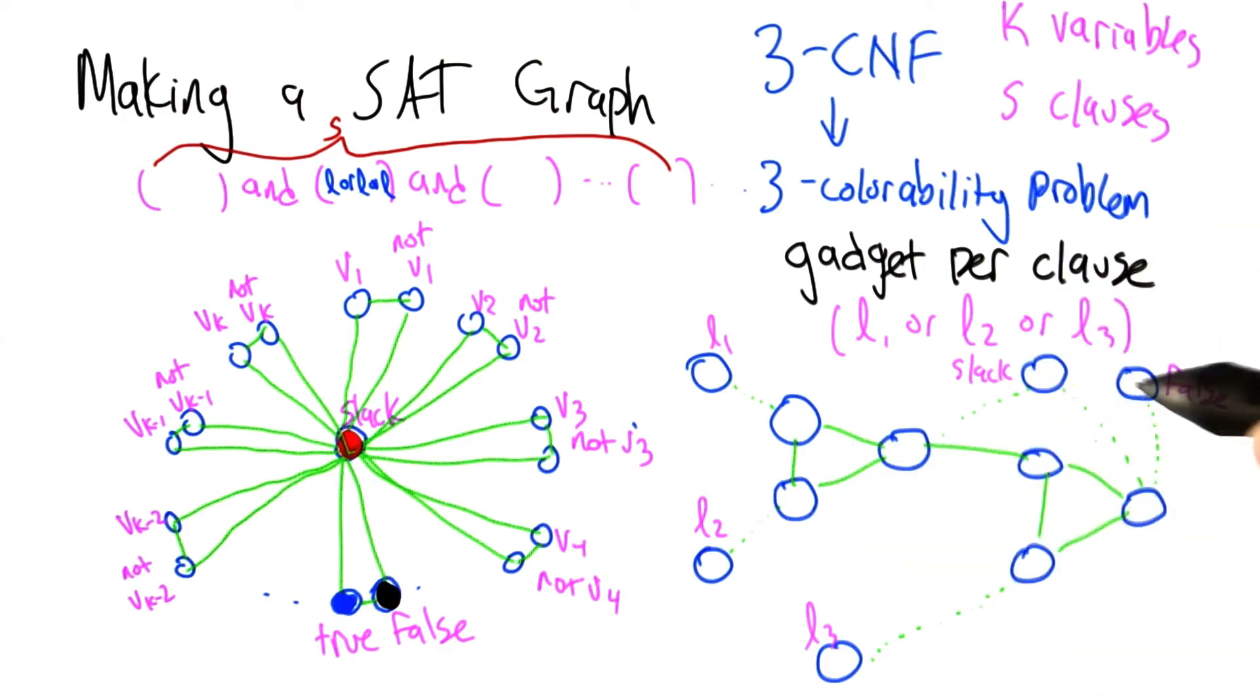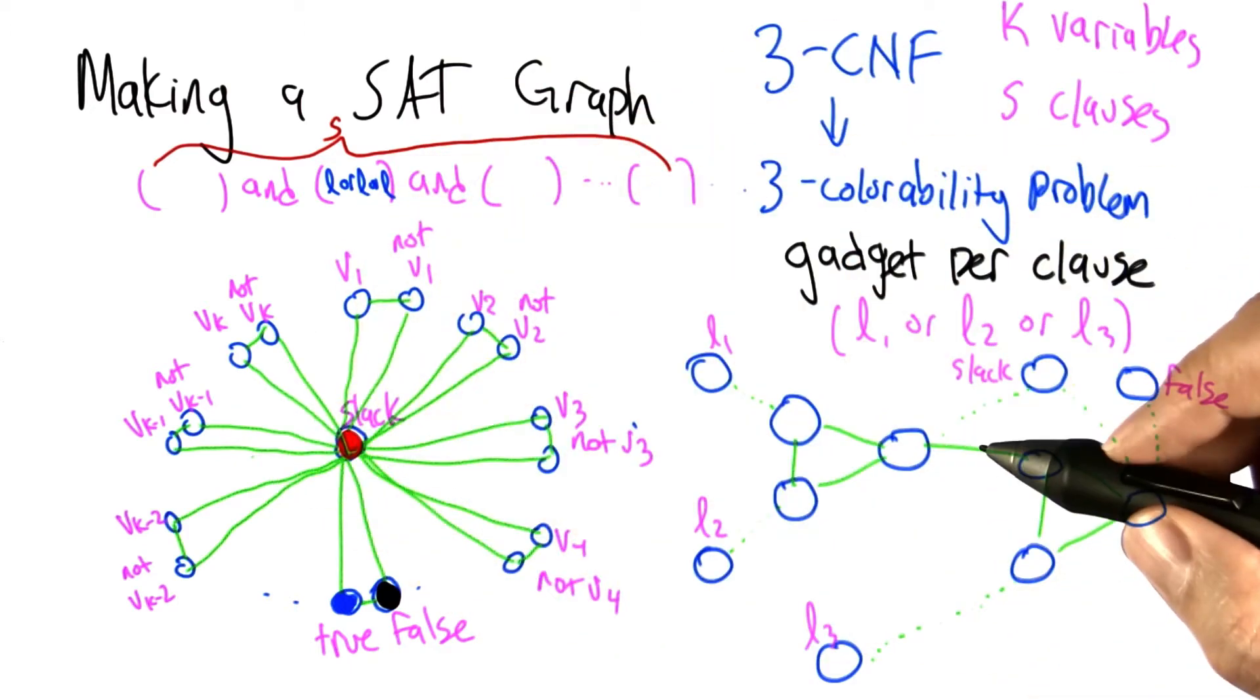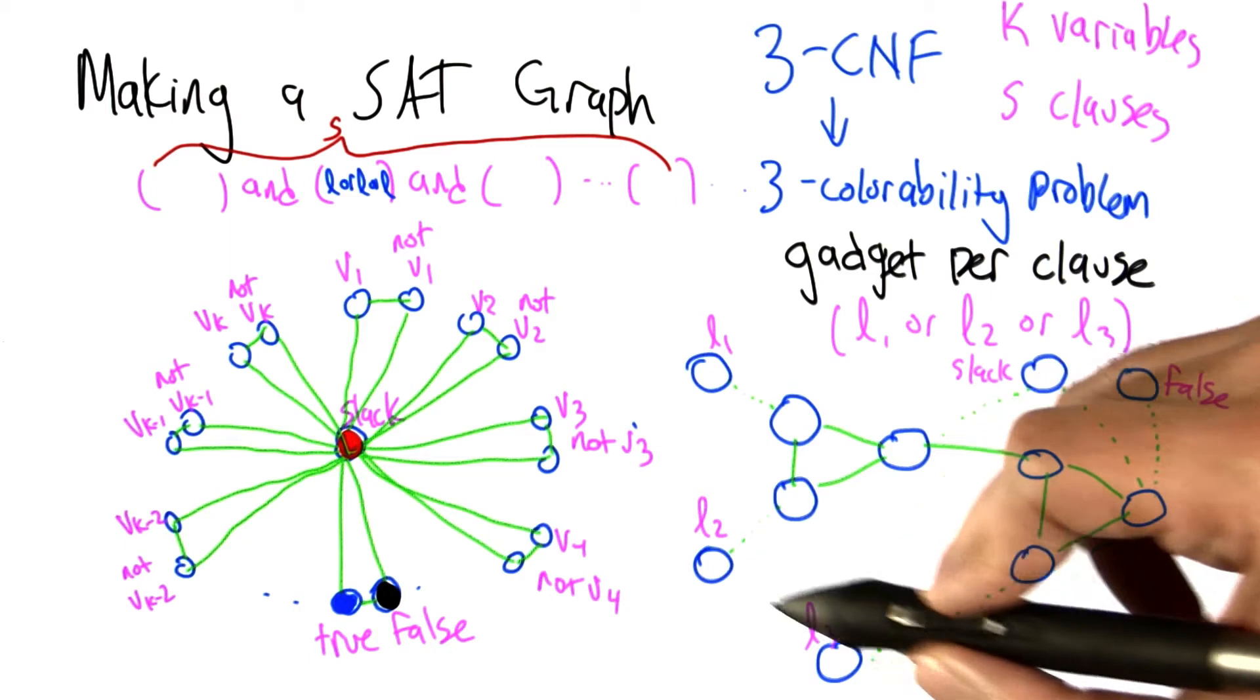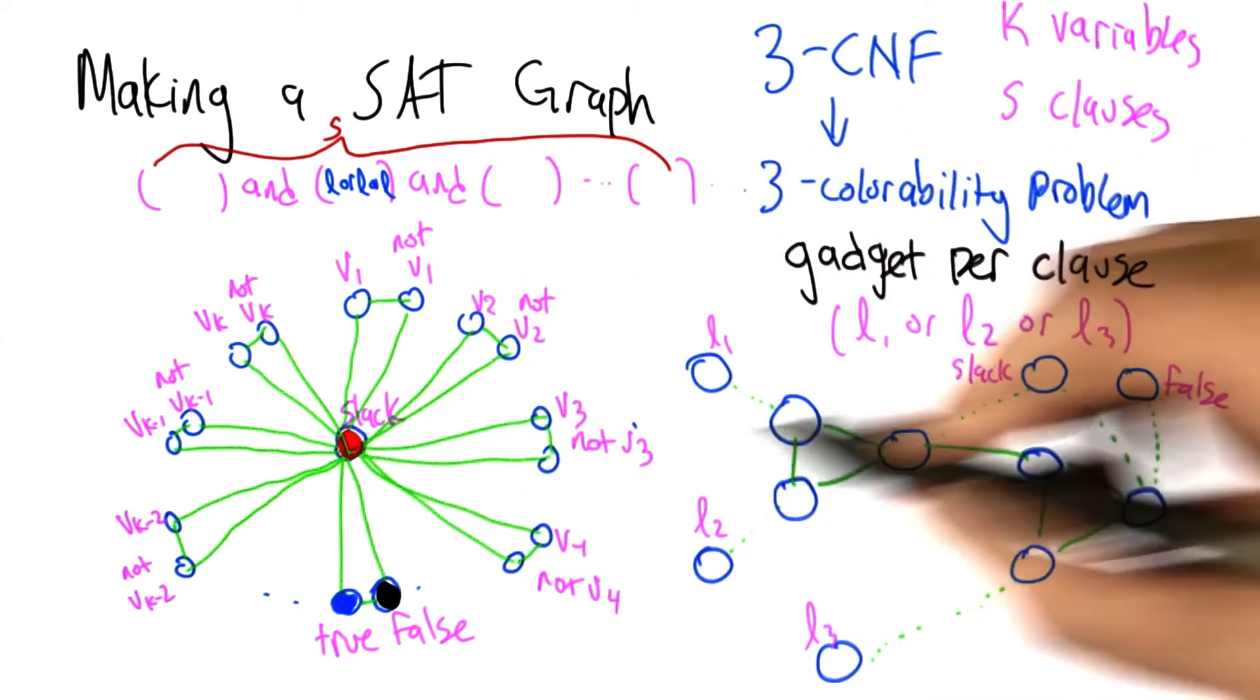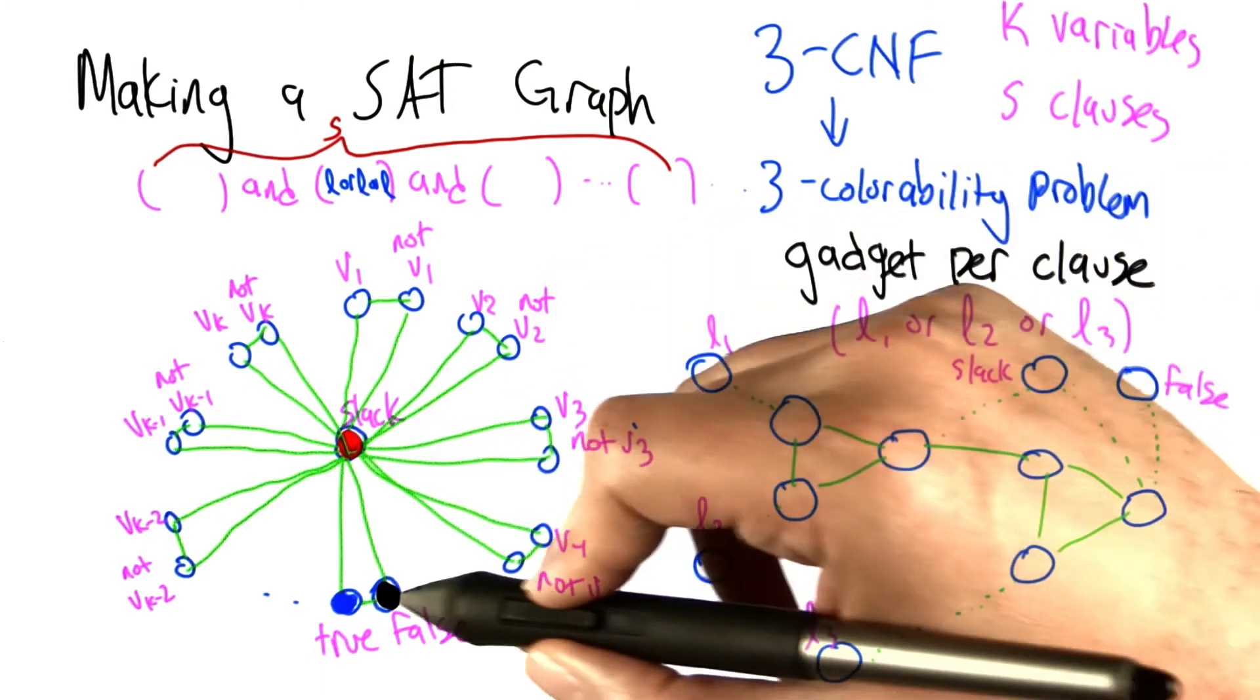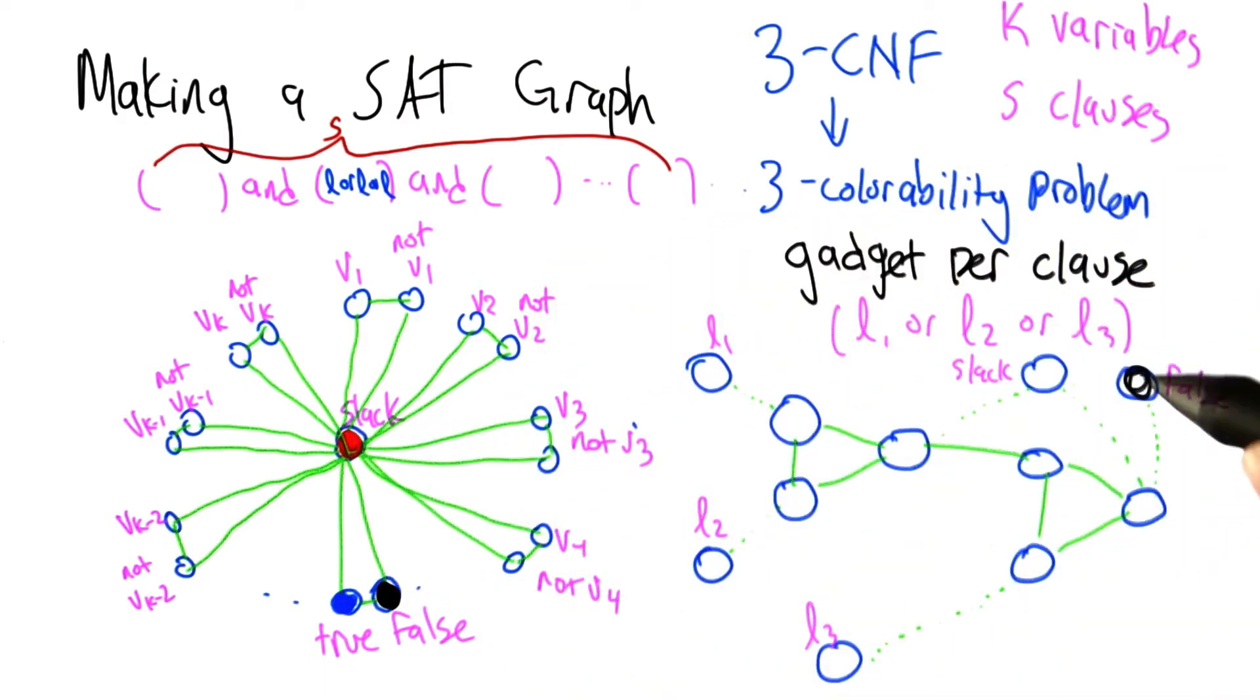So here's the 6 nodes. They're going to be connected to some of the nodes that are already in the graph. In particular, the 3 literals that are in the clause, and the slack variable in the middle, slack node in the middle, and the false node off to the side.